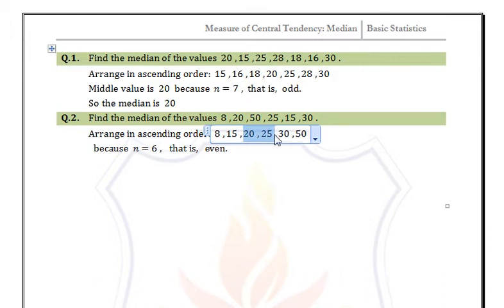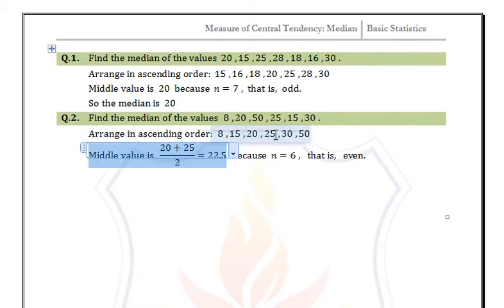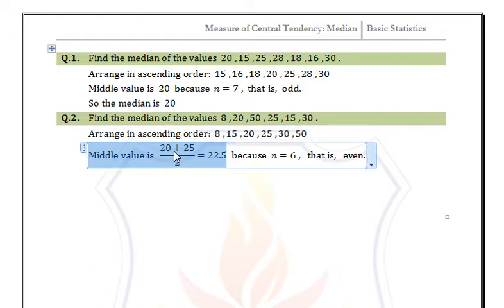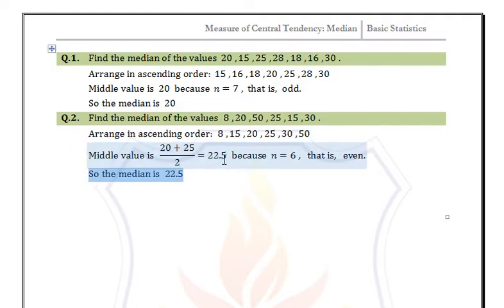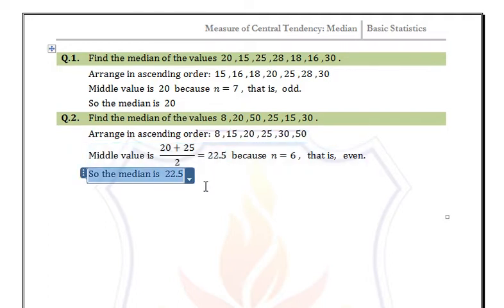For the median we find the arithmetic mean of the two middle values. The middle values are 20 and 25, so the median is (20 + 25) / 2, which is 22.5. Therefore, the median is 22.5.